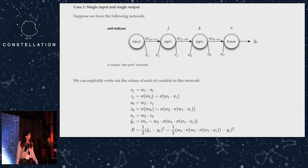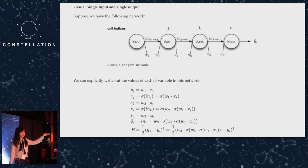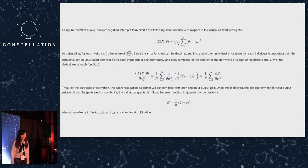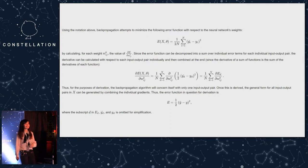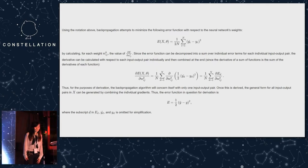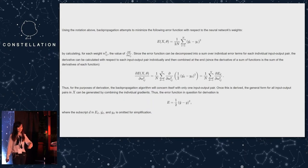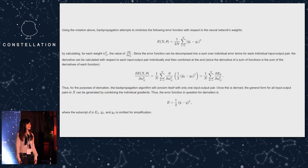A single input and a single output — you need to know what these variables at each step represent, and this is how you calculate it. The second concept is back propagation, which is about trying to minimize the error function with respect to the neural network's weights. Here's the expanded formula and the totally condensed formula.